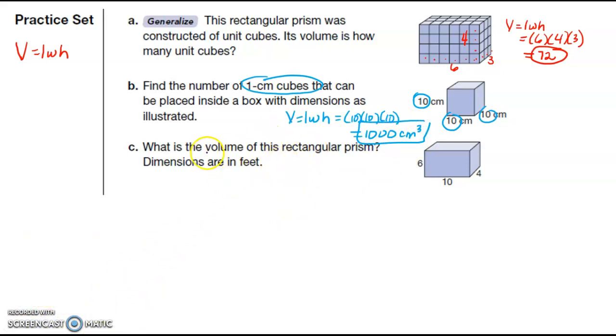And then the last one on this page, what is the volume of this rectangular prism? So I have volume is equal to length times width times height. I have my length is equal to 10, my width is equal to four, my height is equal to six. So let's say 10 times four times six is 240 feet cubed.